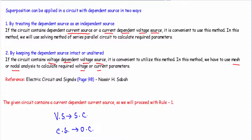In our circuit, the circuit contains a current dependent current source. Since it contains a current dependent current source, we will proceed with rule number one — keeping the dependent source active separately like our independent sources, and replacing the current source with an open circuit while keeping other independent sources active.